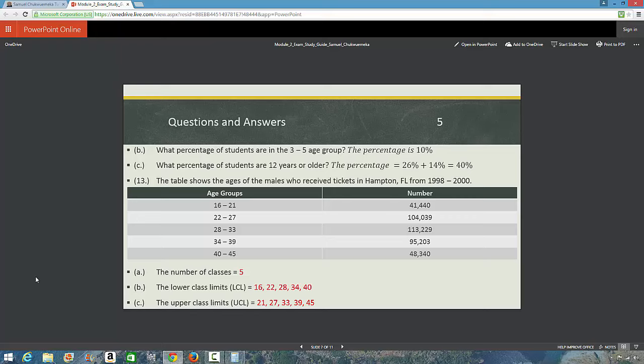Question 13. The table shows the ages of the males who received tickets in Hampton, Florida from 1998 to 2000. I think I read about Hampton, Florida. I decided to put this city. I read that they give a lot of tickets. That is what I read. Okay. How do we interpret this table? Males between the ages of 28 and 33 years old received 113,229 tickets from 1998 to 2000. The number of males between the ages of 40 and 45 years old received 48,340 tickets from 1998 to 2000. So, that is the interpretation.